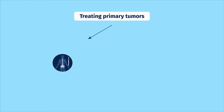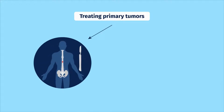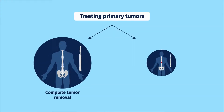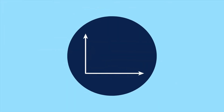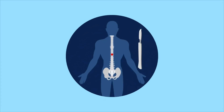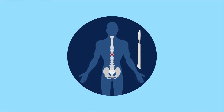When treating primary tumors, the goal should be to completely remove the tumor or achieve appropriate margins to ensure the patient the greatest chance of survival. Often, this means the tumor is removed in one piece without entering or disturbing it, leaving the margins around it free of tumor.